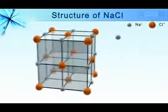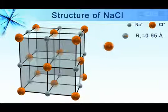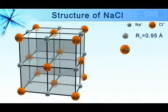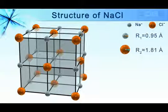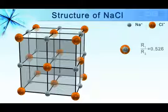Let's see the structure of NaCl. The radius of a sodium ion is 0.95 angstrom and that of chloride ion is 1.81 angstrom. The radius ratio of sodium ion and chlorine ion comes out to be 0.526.